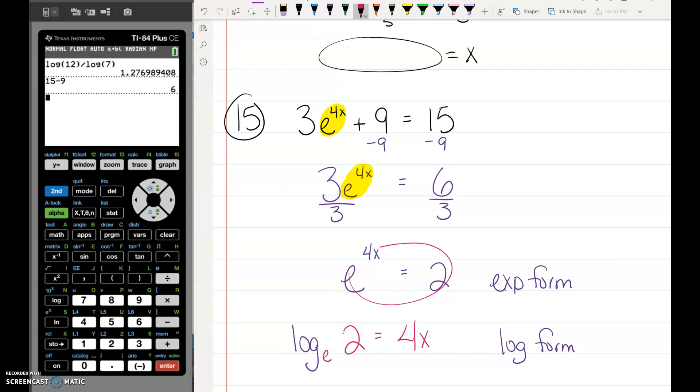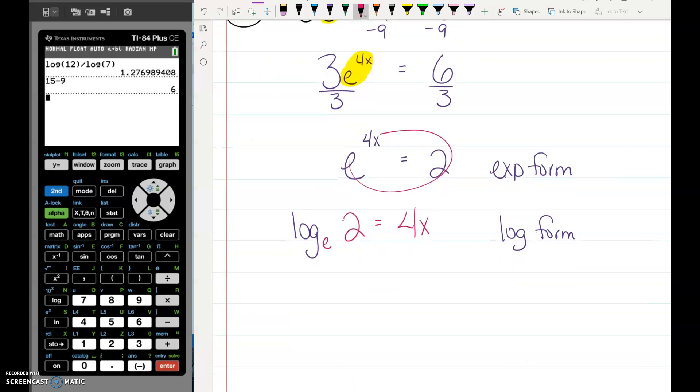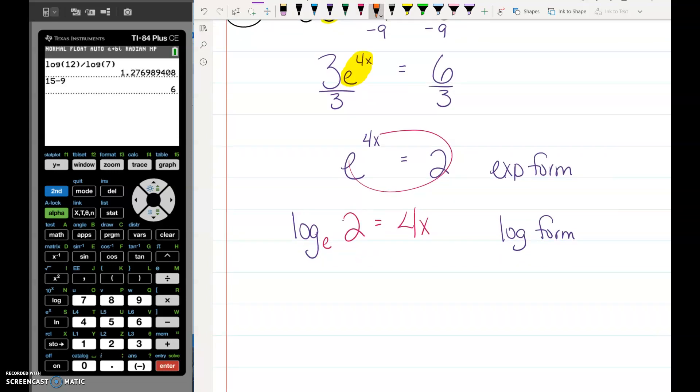This one's a little bit weird because you have to remember that log base e is exactly the same as ln. Anytime you see log base e, you can just replace that with ln. So we have ln of 2 equals 4x.